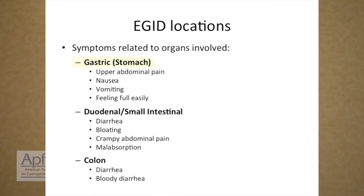In gastric or eosinophilic gastritis, you see upper abdominal pain, nausea and vomiting, and the sensation of feeling full very easily — early satiety. On endoscopy, you could see ulcers or visible inflammation.